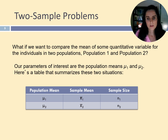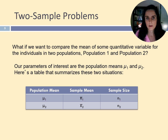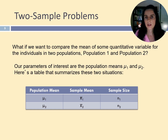The actual means that we compute from the two samples are labeled x-bar, so we have x-bar1 and x-bar2. Another common notation is capital M, so we would have M1 and M2. For the number of individuals in each of the two samples, we use the notation N1 and N2.